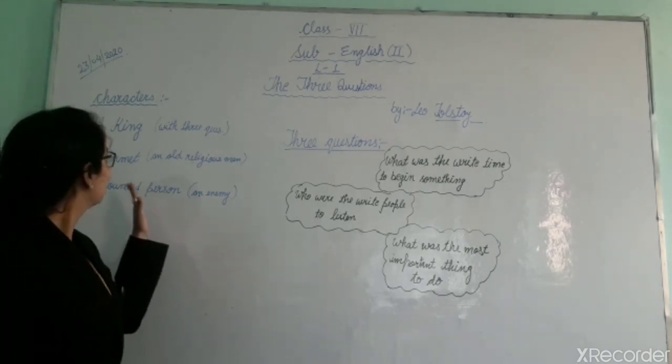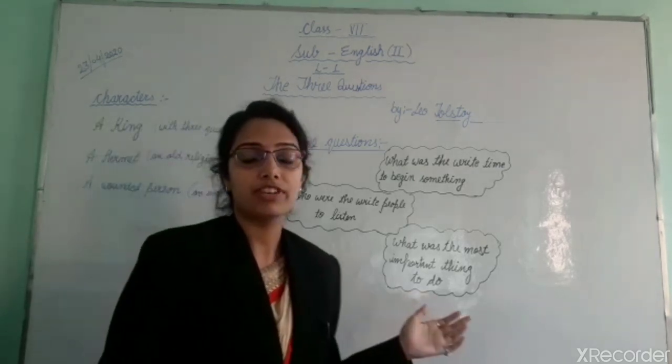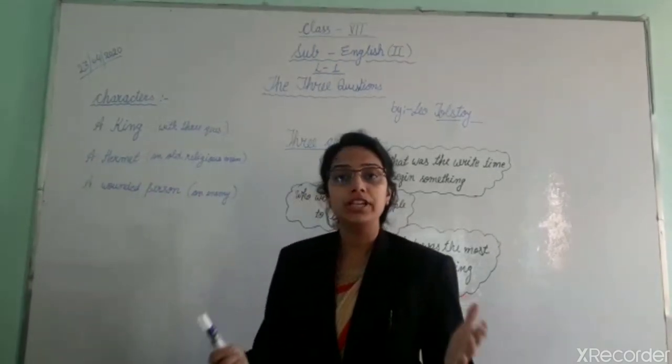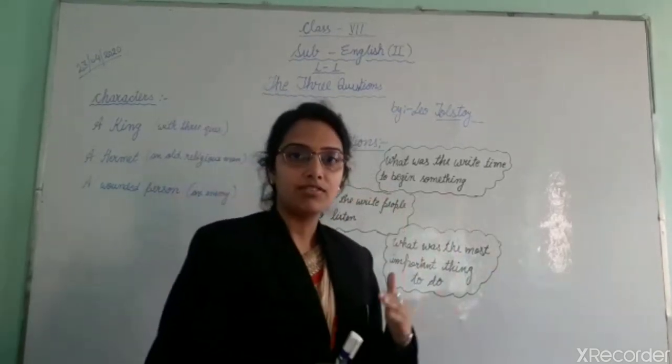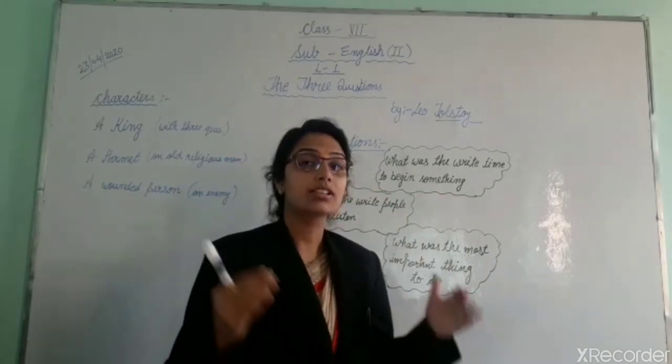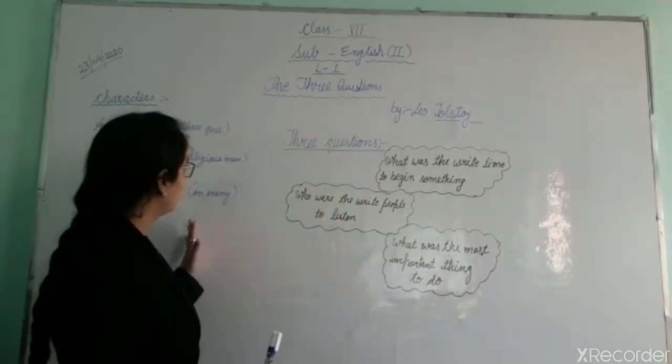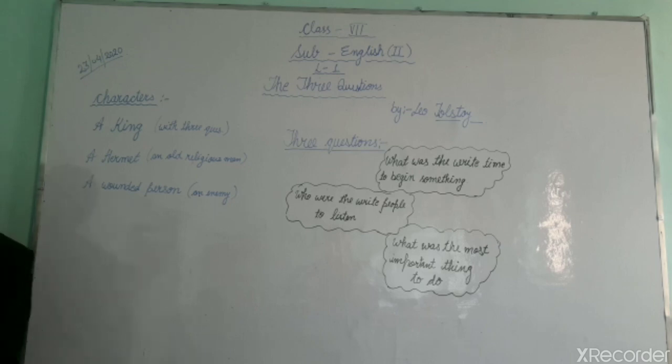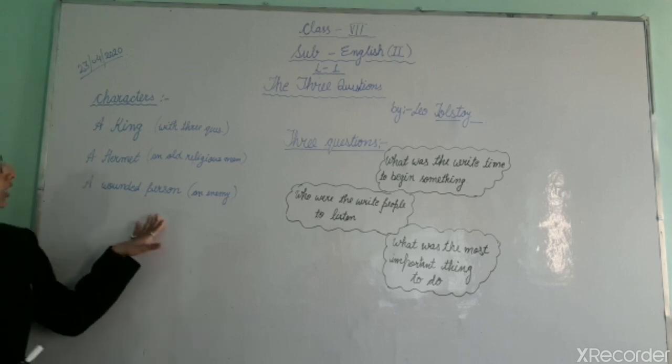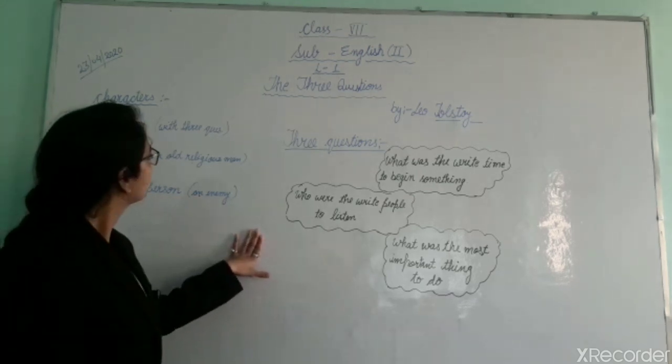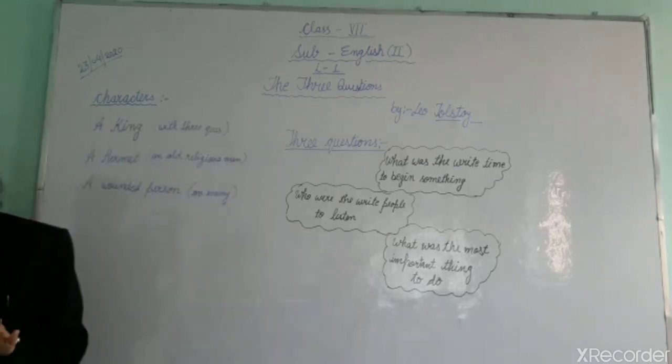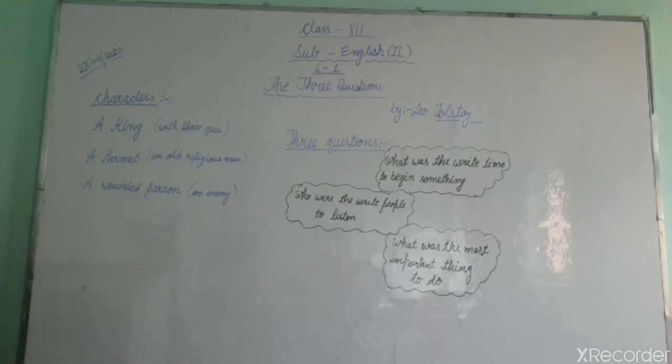To interact with the hermit, as we have told you that the hermit was a very simple person, a poor man and a religious person, the king disguised himself. He put on simple clothes and left his bodyguards behind. The king was there with the hermit to ask his questions, but the hermit didn't answer or react directly and continued digging.